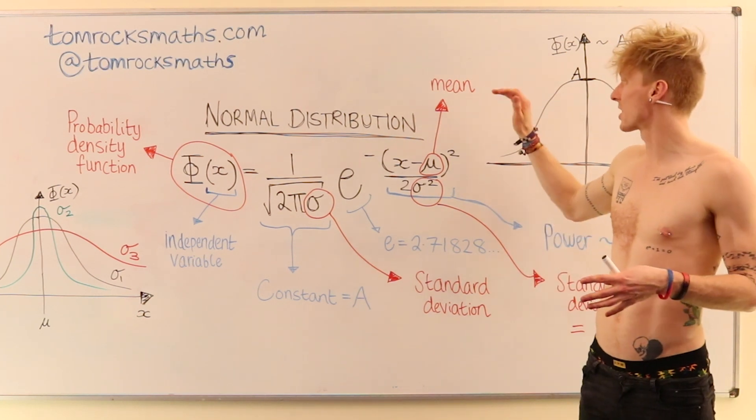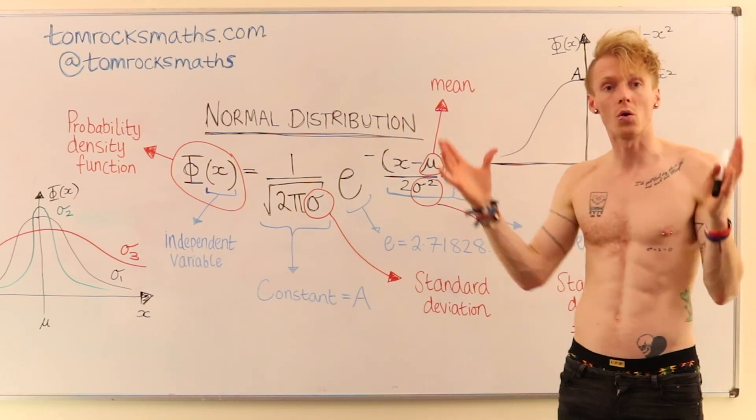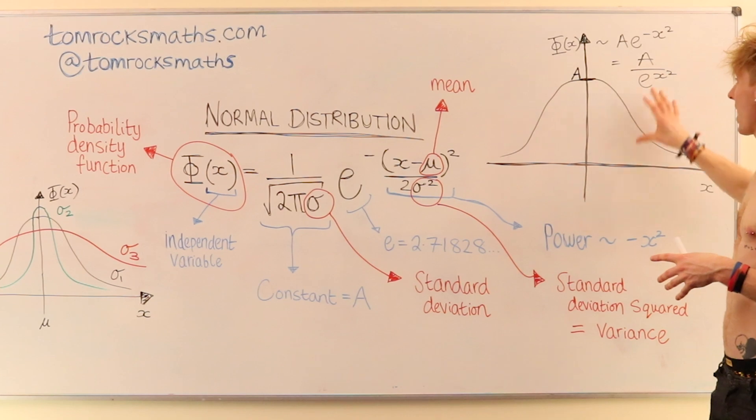So mu here is just the mean value of the data. So it is just the average value across all of the data points. And if you go back to our graph over here,